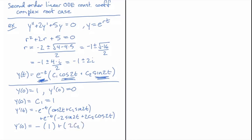And that has to be equal to 0 to satisfy the initial condition. So we get 2c2 is equal to 1, so c2 is equal to 1 half.